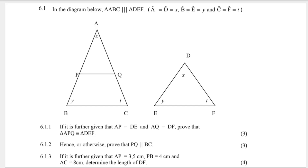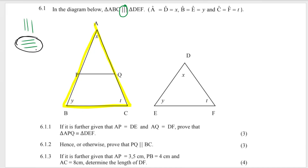So we've got 6.1 — it says in the diagram below, triangle ABC, and you can see that that's the big triangle here on the left. ABC is similar — remember this symbol over here means similar. This way is similar, this way is congruent. The way I think of it, congruent is like equal — like a triple equal sign — super, super equal, identical. So this one is similar.